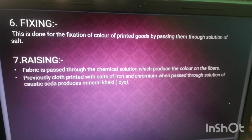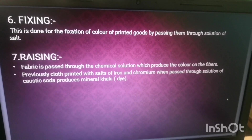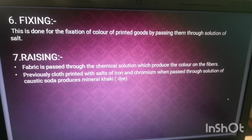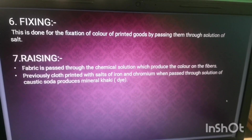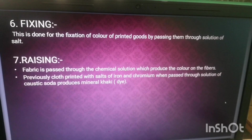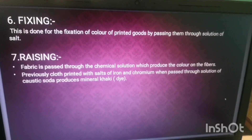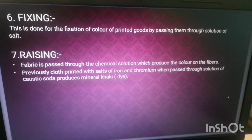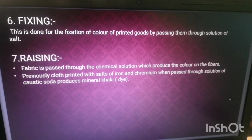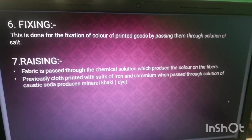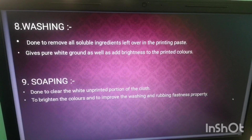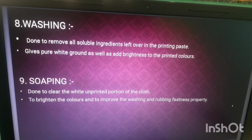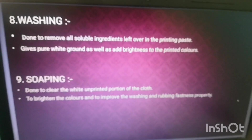Fixing: this is done for the fixation of color of printed goods by passing them through a solution of salt. Raising: fabric is passed through a chemical solution which produces color on the fibers. Previously, cloth printed with salts of iron and chromium, when passed through a solution of caustic soda, produces khaki dye. Washing: done to remove all soluble ingredients left over in the printed paste, to give a pure white ground as well as add brightness to the printed color.